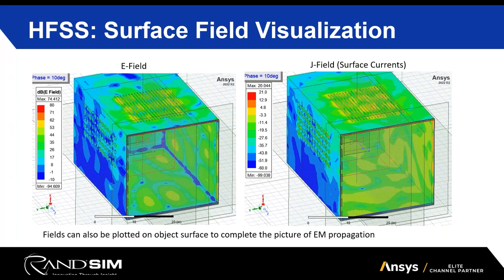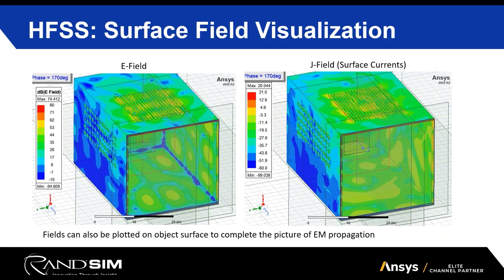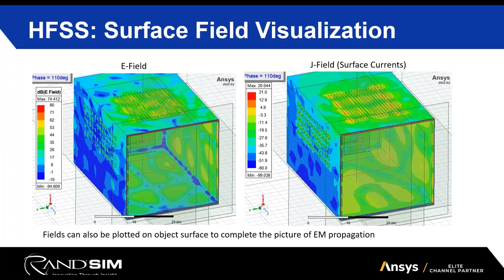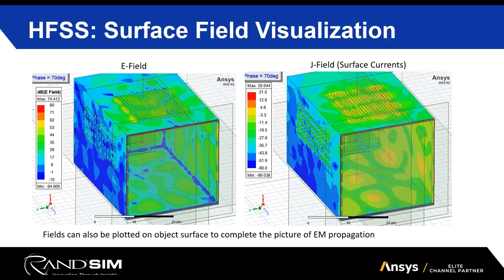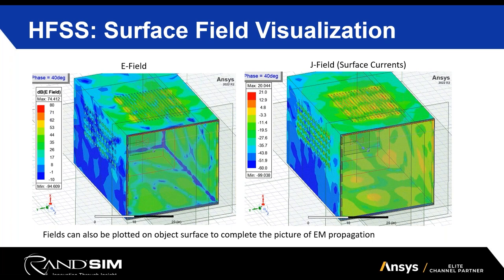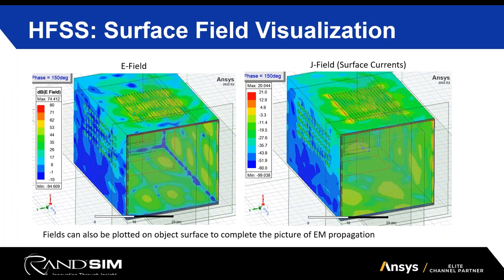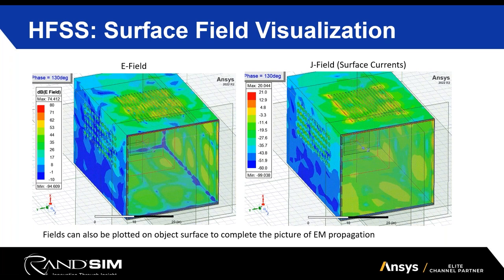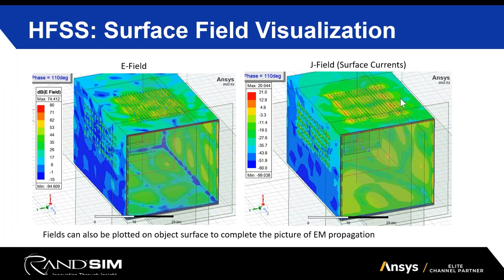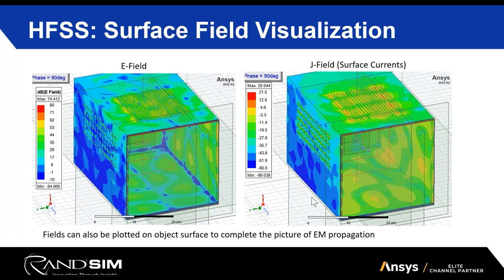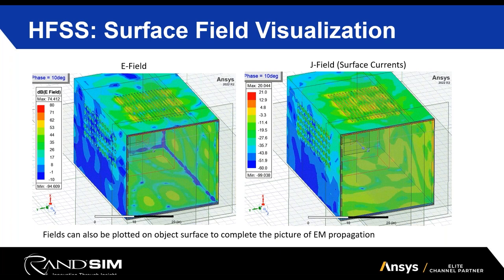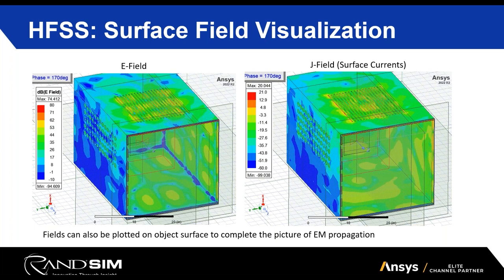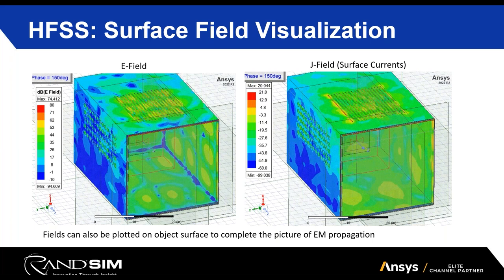Beyond cross-sectional planes, it's also very useful to look at surface field visualizations. Two of the most common surface plots are the E-field, shown on the left, and the J-field — surface currents — on the right. The surface current plot shows higher concentration at specific points, providing an additional visualization of how the phenomenon is getting out of your system, helping to further pinpoint points of failure before anything is sent to fabrication.